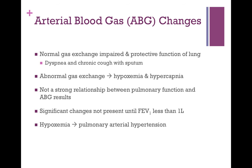Arterial blood gas changes are typically seen when COPD has progressed to more severe forms. Normal gas exchange is impaired, resulting in dyspnea and chronic cough with sputum. Abnormal gas exchange results in hypoxemia and hypercapnia. There is not a strong relationship between pulmonary function and ABG results, and significant changes are not typically seen until FEV1 is less than 1 liter. In severe cases, hypoxemia can lead to pulmonary arterial hypertension.